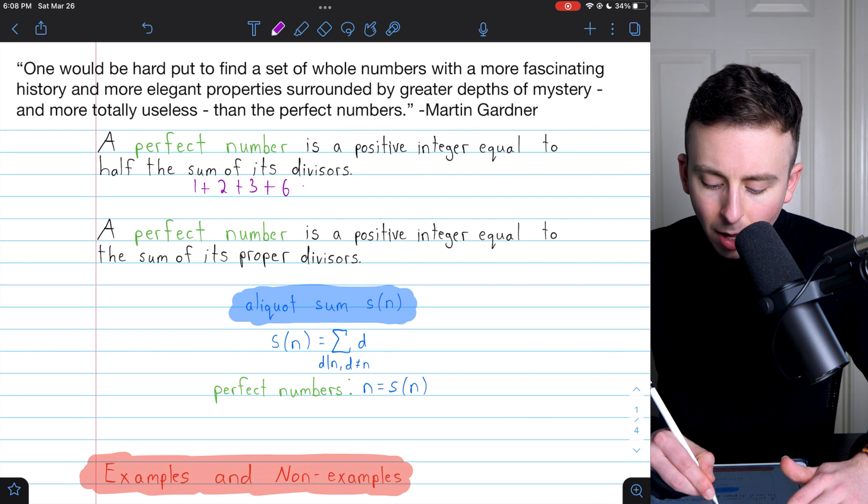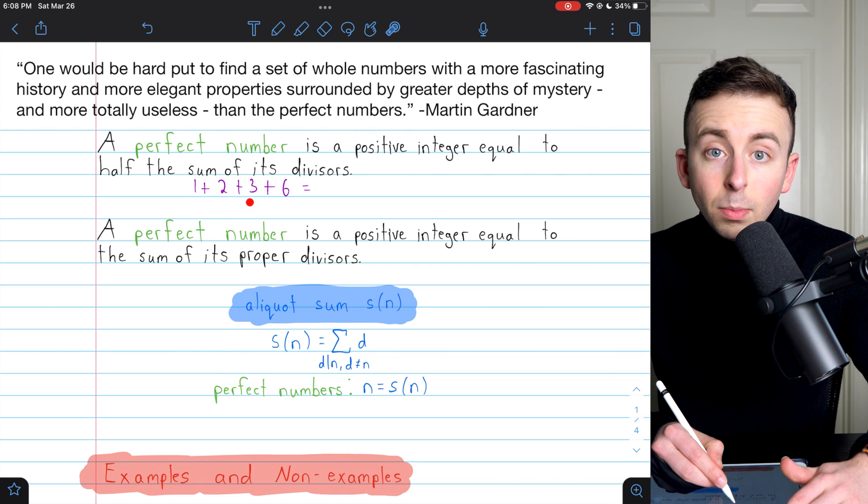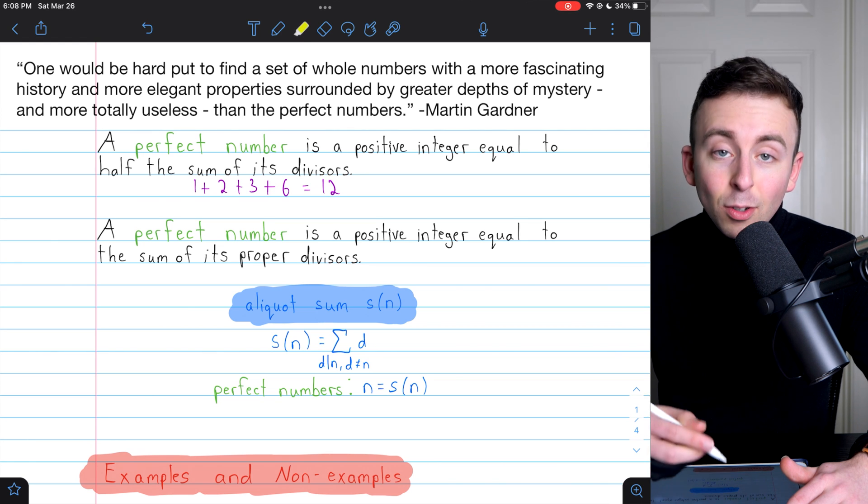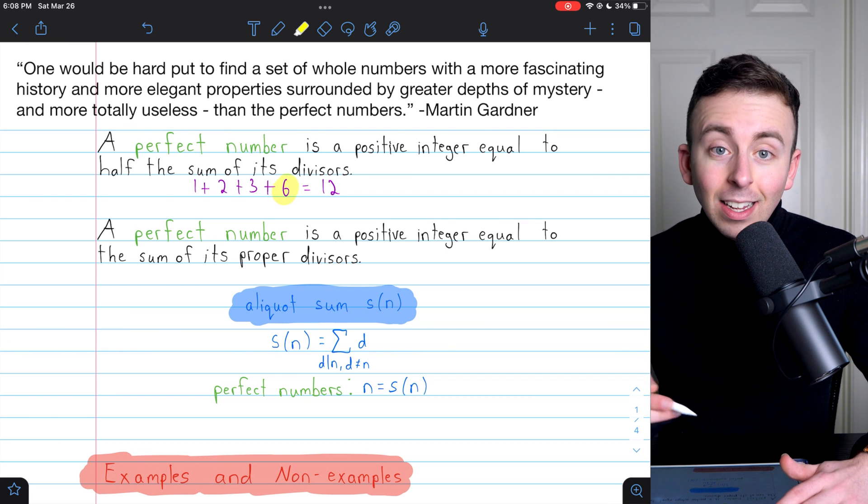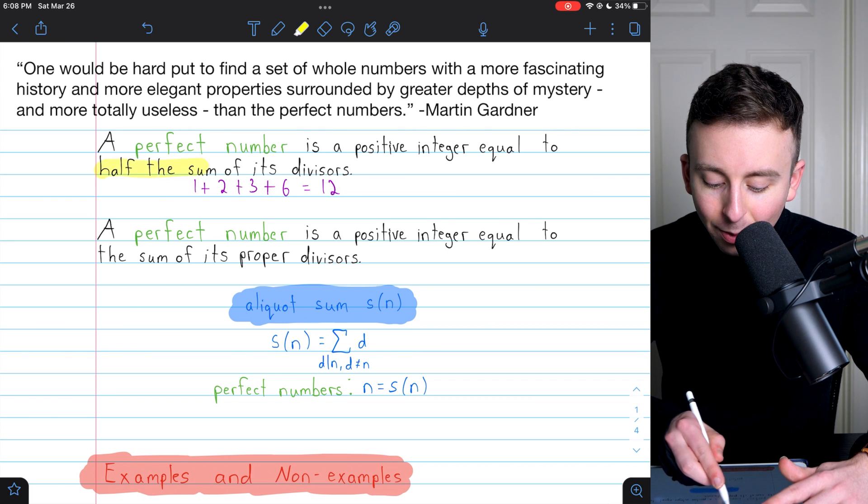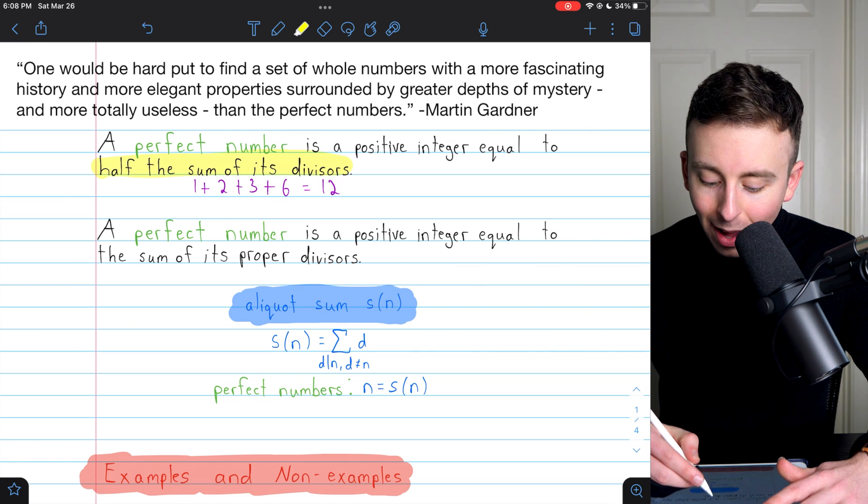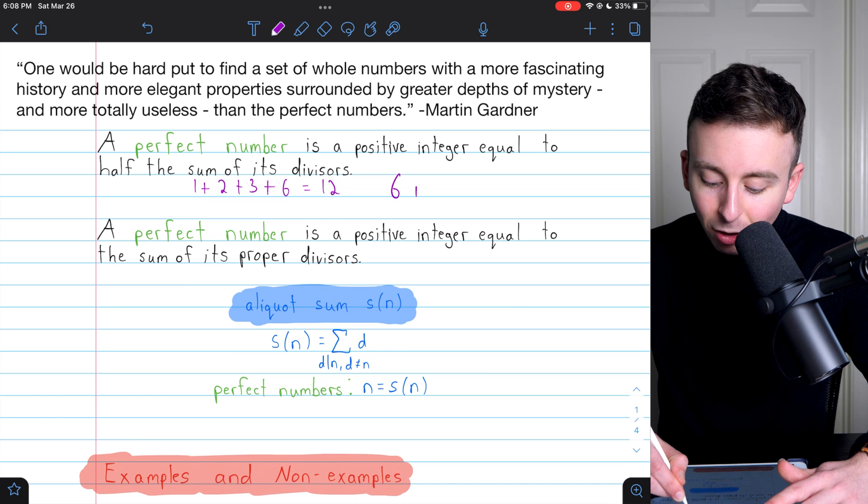Now, if we add them up, what do we get? 1 plus 2 is 3. Plus 3 is 6. And then plus 6 is 12. And that's twice 6. So you can see that 6 is indeed half the sum of its divisors. All of its divisors add up to 12. 6 is half of that. And so 6 is a perfect number.